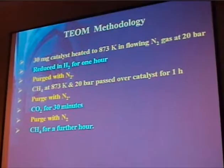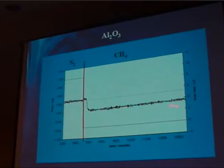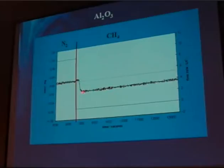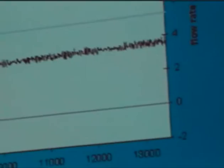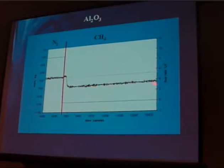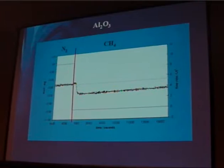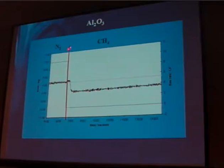Part of the protocol is to see if we can use CO2 to clean any of the carbon off. First confirming that at 20 bar the alumina support alone does nothing — here's a typical trace showing weight under nitrogen, then weight under methane. The change is due to buoyancy effects when you change gases in the TEOM — you get a step change — but you can see the trace is flat, meaning methane is doing nothing with the alumina. The red lines in the following graphs indicate where we've changed gas flows.